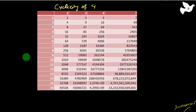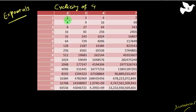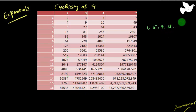Now, to find the last digit of exponents, I need you to see something called the cyclicity of 4. Here I have written powers of 2: 2^1, 2^2, 2^3, and so on up to 2^16. The unit digit of 2^1 is 2. If I go to 2^5, again it is 2. 2^9, again 2. 2^13, again 2. And 2^17 also has the same unit digit. The difference between all these powers is 4.